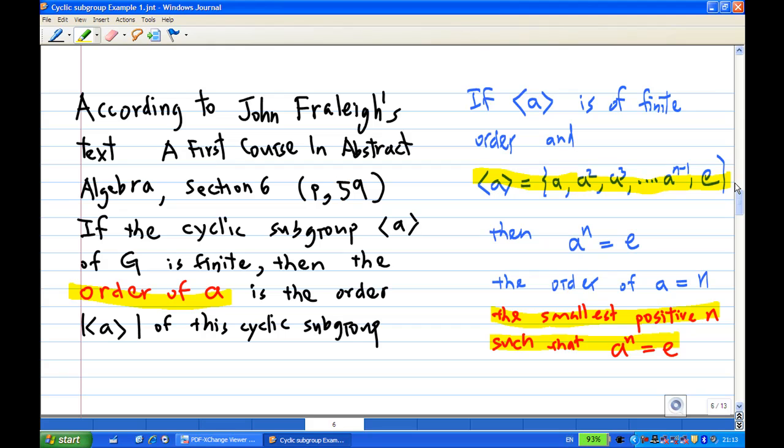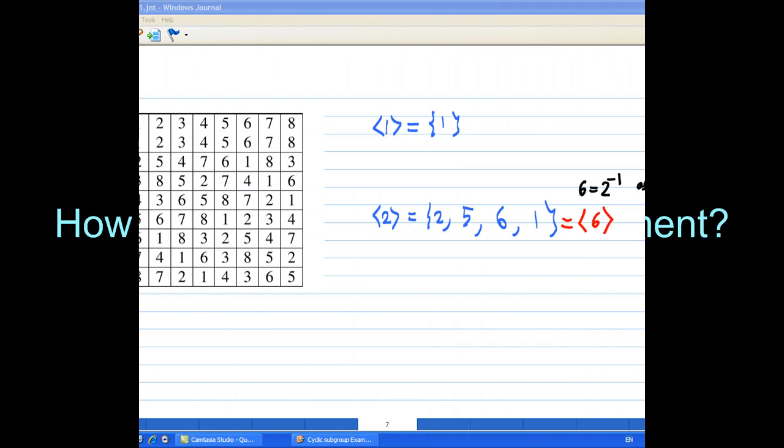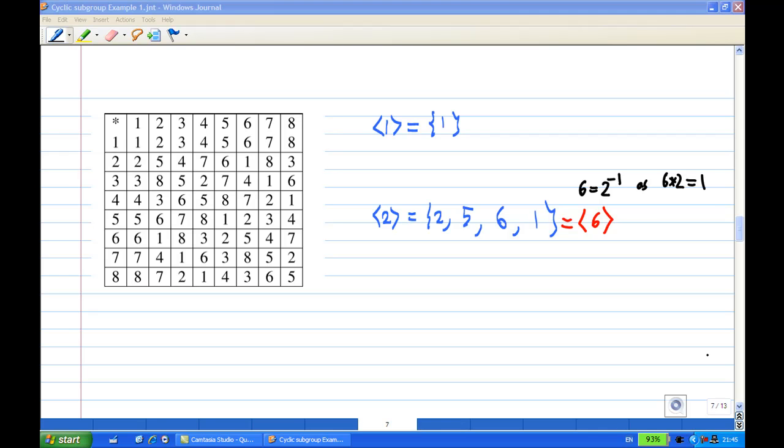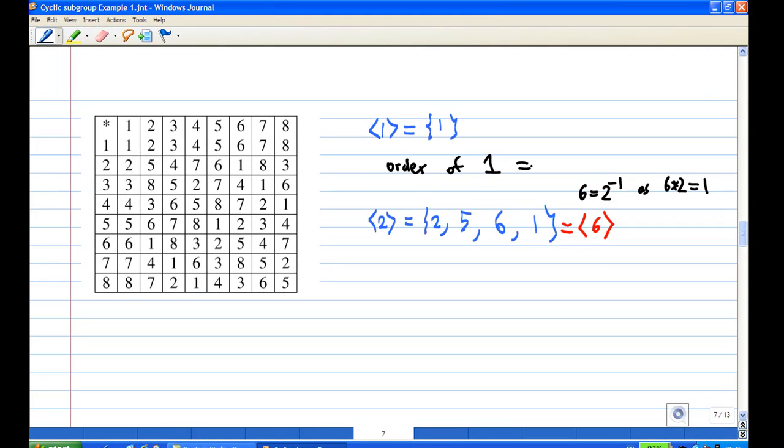So if you understand this, then you can find the order of each element. From the solution of the earlier part, we know that the cyclic subgroup generated by 1 consists of 1 only. Therefore, the order of 1 is equal to 1.